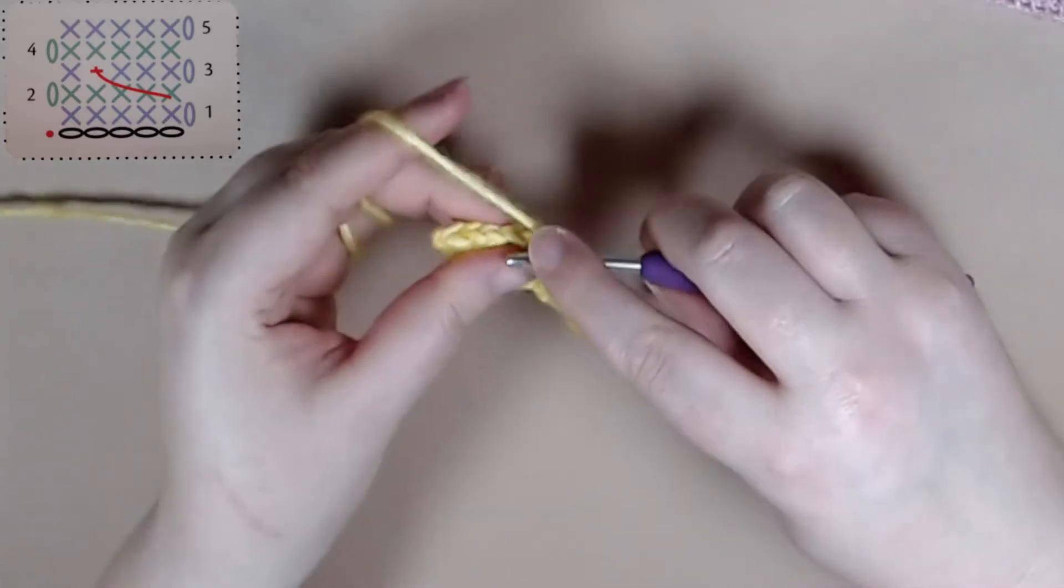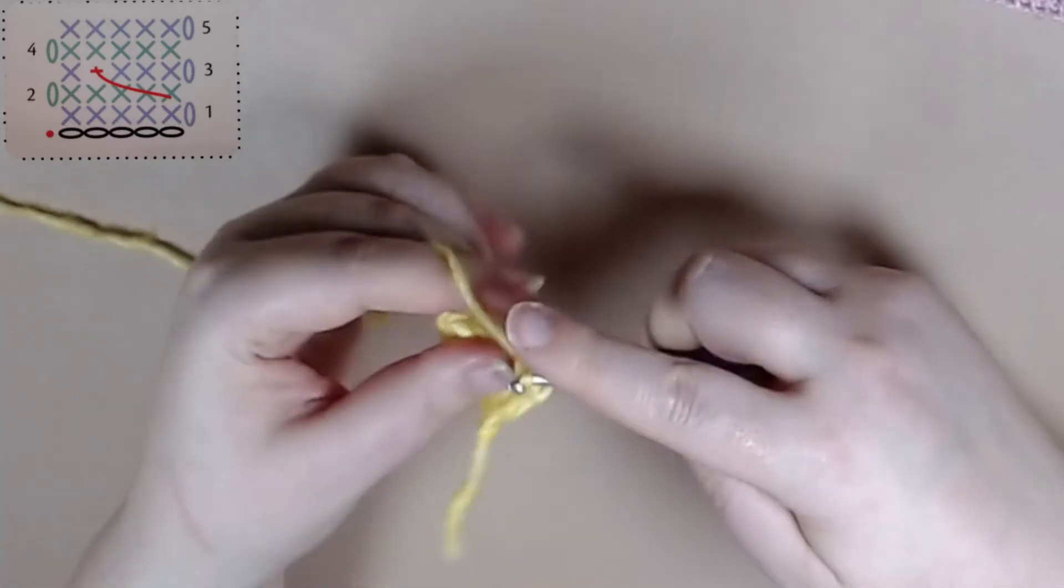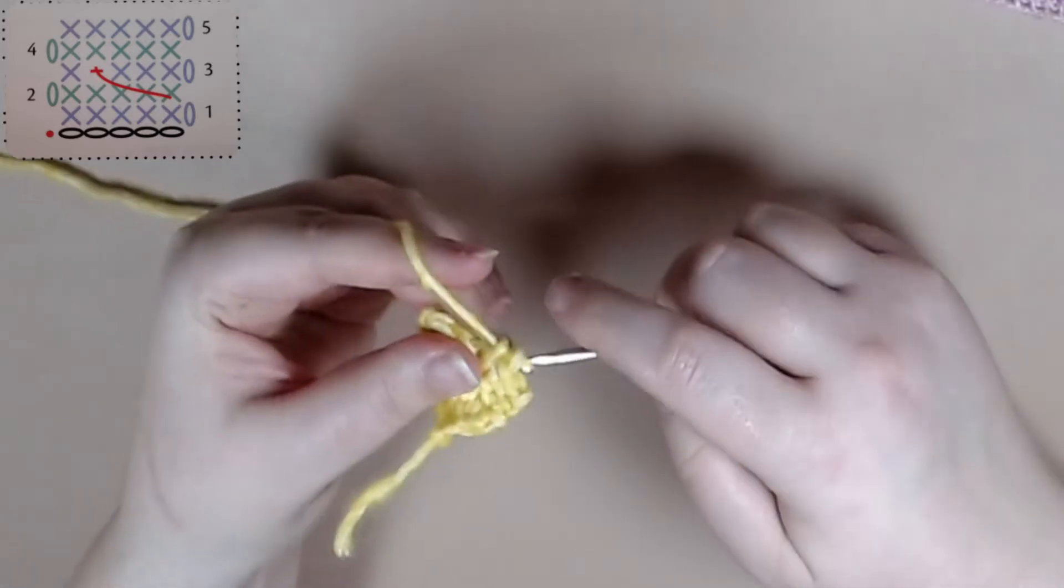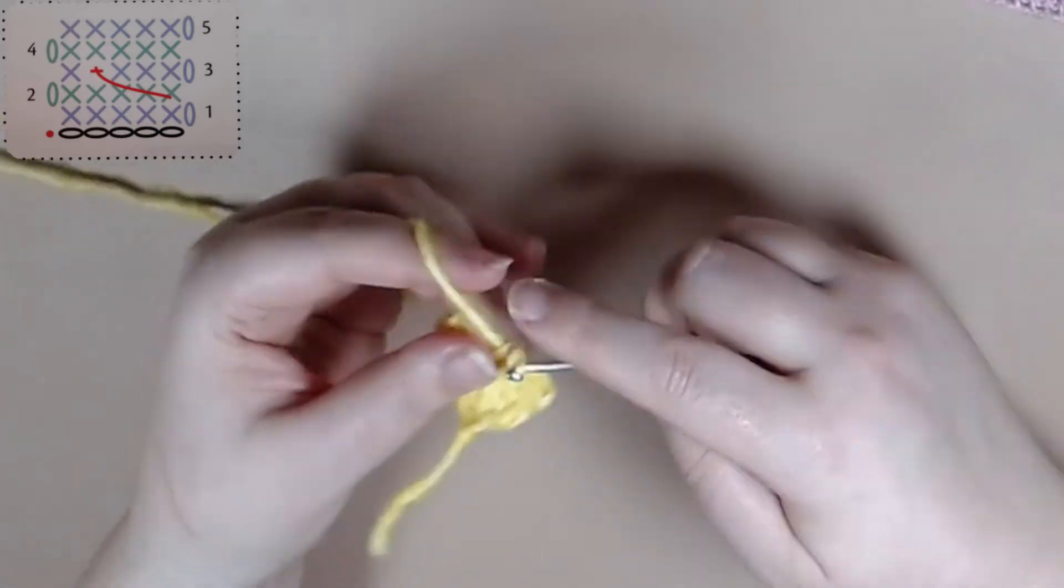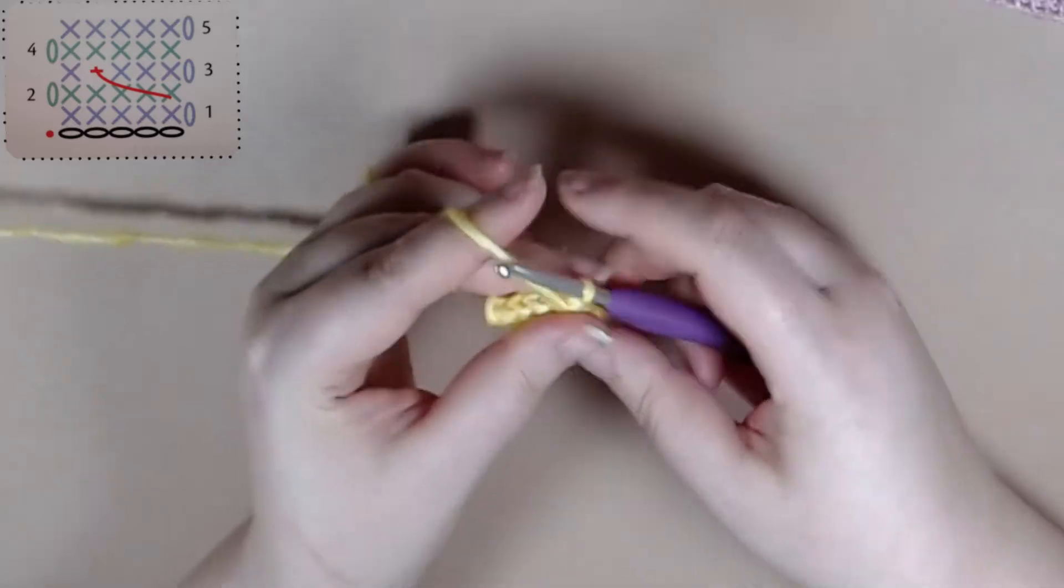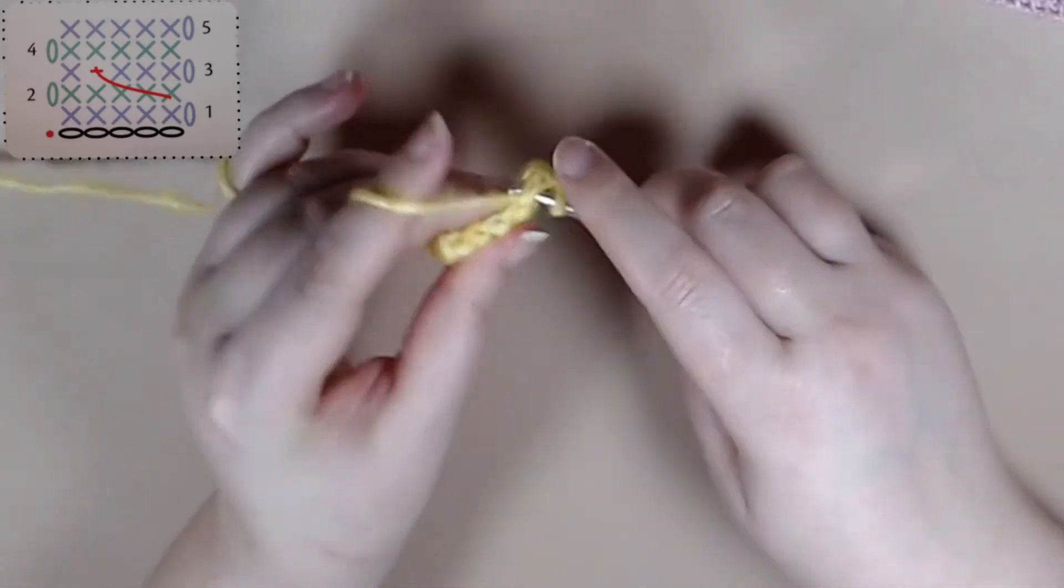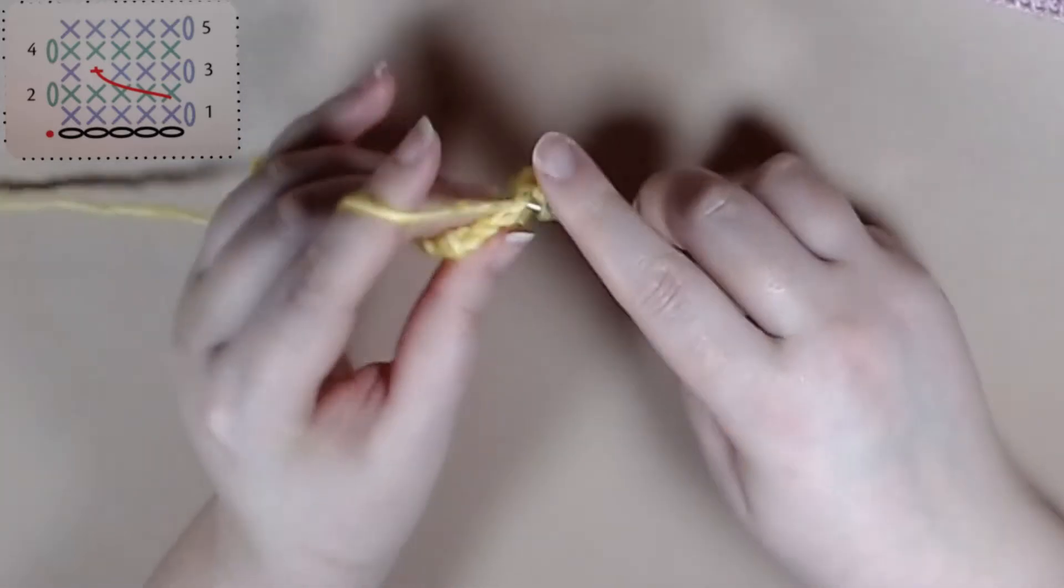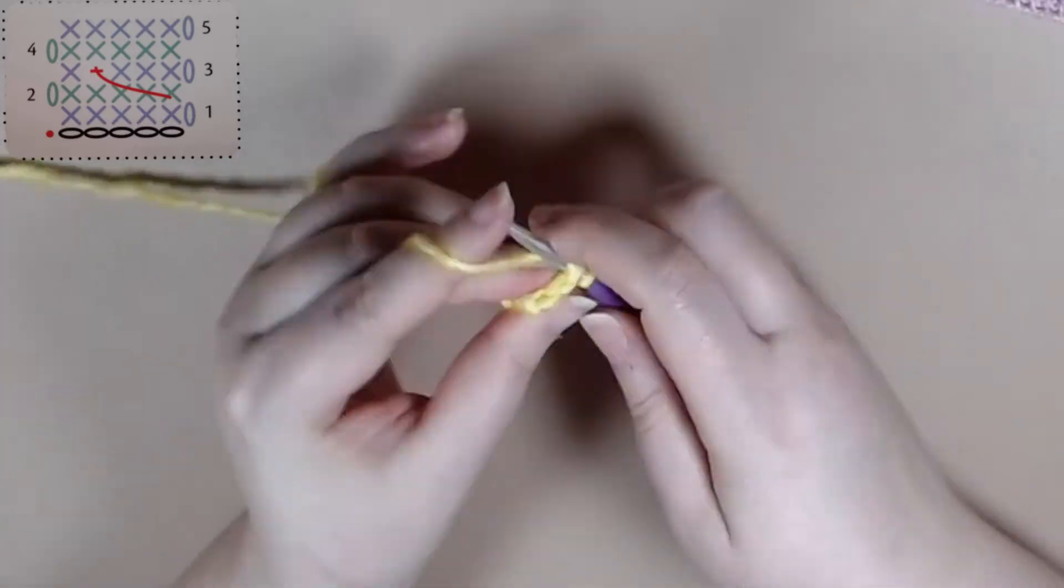So row four is you just chain one and single crochet all the way across. Row five is exactly the same as row four. You chain one and single crochet all the way across.